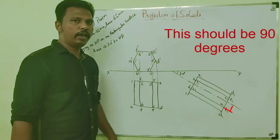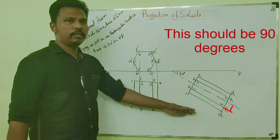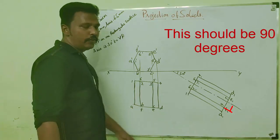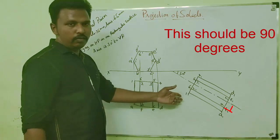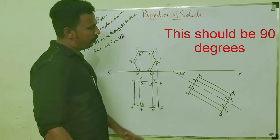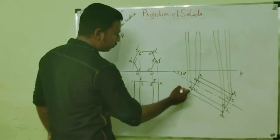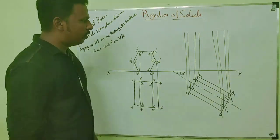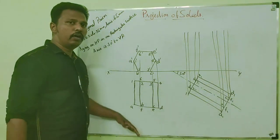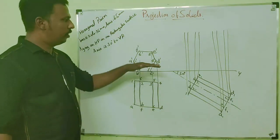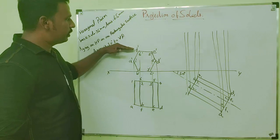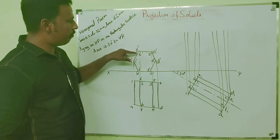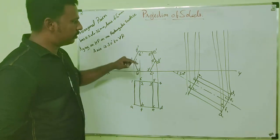Now I have named all the points in the second view. Then we have to project all the points to the front view. Let us mark all the points in the front view. This line corresponds to points F, E, 5, and 6.